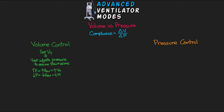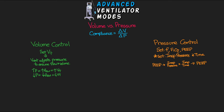In basic pressure control we set a frequency, an FiO2, a PEEP, an inspiratory pressure, and an inspiratory time. What's happening is the vent switches from our PEEP level up to our inspiratory pressure and holds that for the set inspiratory time, then drops back down to PEEP. For example, with a PEEP of 5 and an inspiratory pressure of 20, the vent holds at PEEP, then increases to 20 for the inspiratory time, then drops back down.